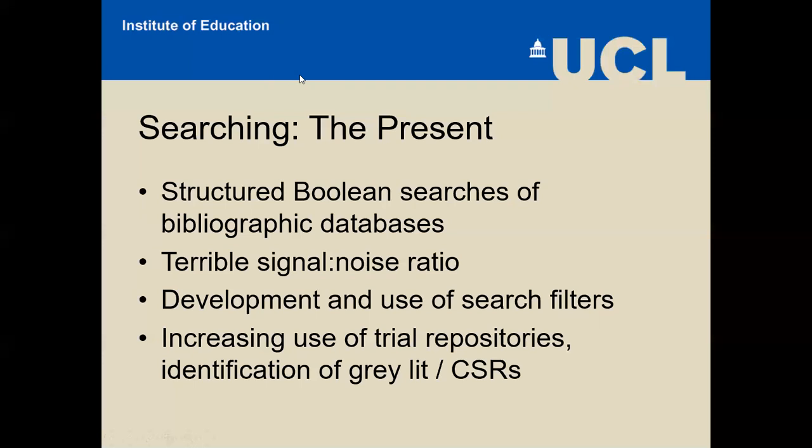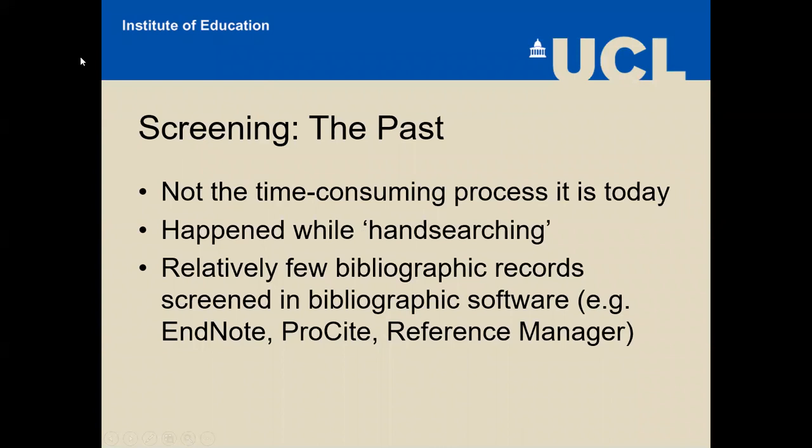Most of the tools for searching are generic tools — I don't really know of any major tools designed specifically for systematic review searching. When we cast our minds back to screening, it wasn't actually the time-consuming process it is today. It often happened while we were hand searching — we'd be looking down the tables of contents of journals, with relatively few bibliographic records screened in desktop bibliographic software such as EndNote, ProSite, and Reference Manager.